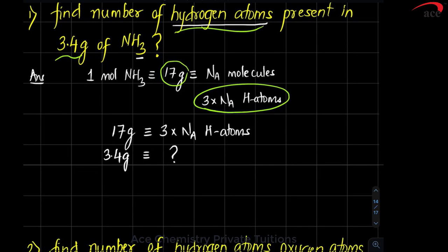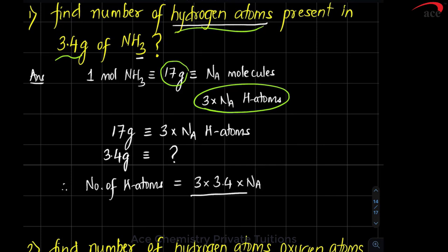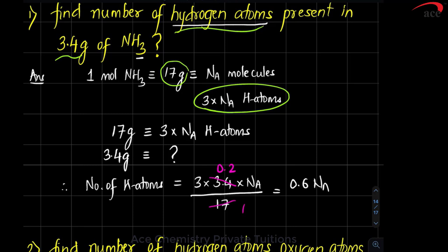So 3.4 grams will correspond to how much? Cross-multiplying, the number of hydrogen atoms = (3 × 3.4 × NA) / 17. Simplifying, the answer will be 0.6 × NA, or written out properly: 0.6 × 6.02 × 10²³ hydrogen atoms.